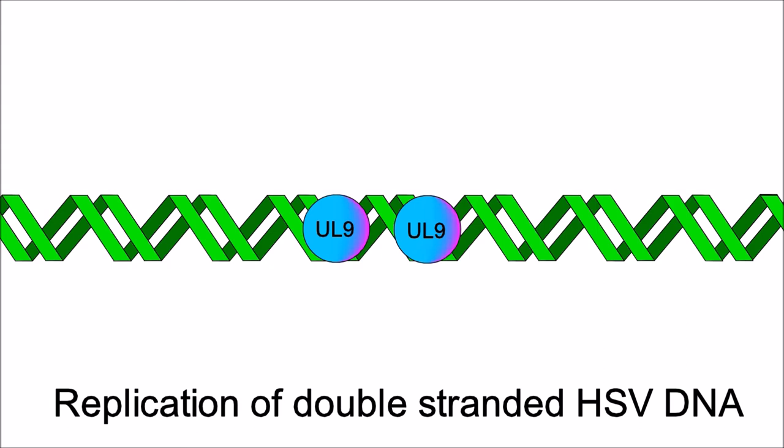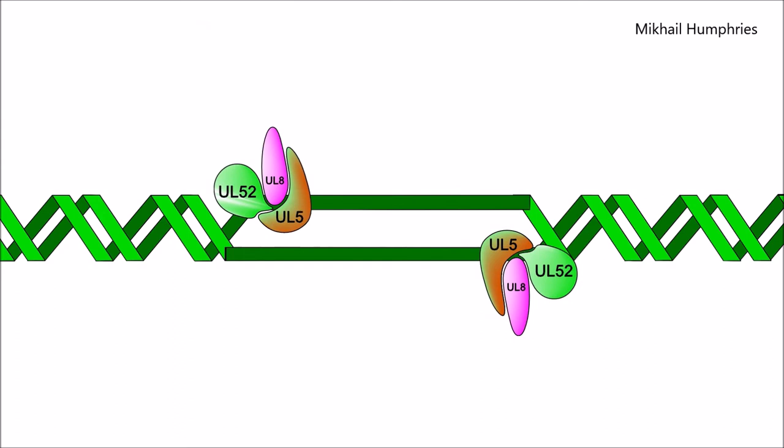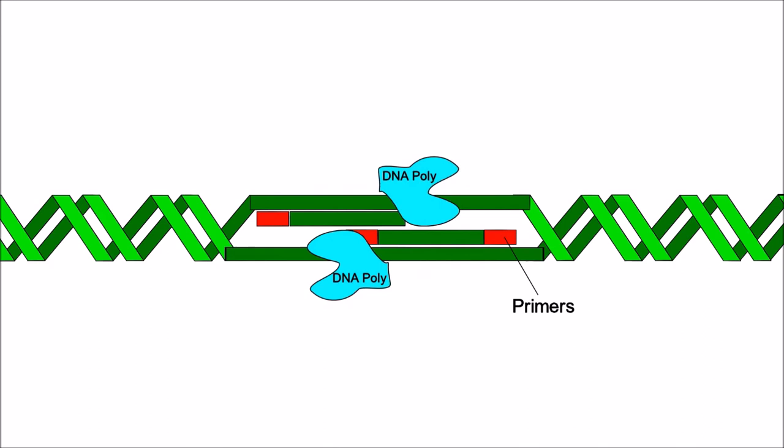Three proteins UL5, UL8, and UL52 bind to the origin site and act as a helicase that unwinds double-stranded DNA. It also acts as a primase placing short RNA sequences complementary to the DNA. DNA polymerase then synthesizes a leading and lagging strand of complementary DNA.